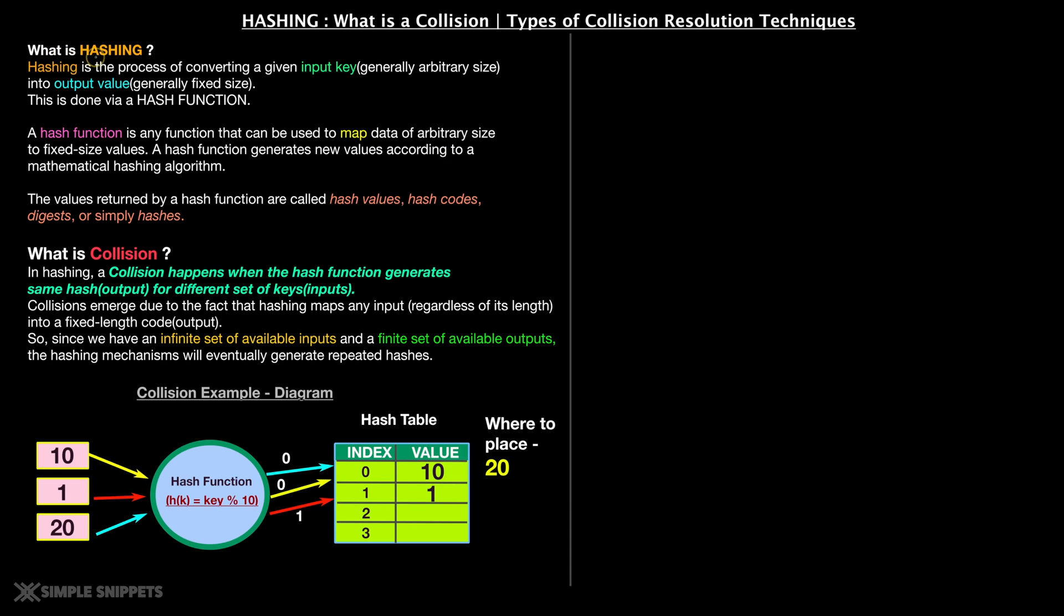Okay, so we've already talked about what is hashing. This part is something that we've already covered in the previous video, so I'm not going to go over this. Our main focus today is going to be what is collision in hashing and the different types of collision resolution techniques. So let's understand what this word is. What is collision basically?